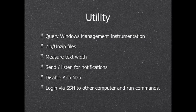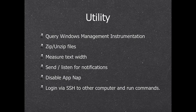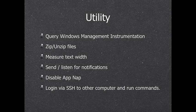We have more utility functions. You can query the Windows Management Instrumentation (WMI) database to see what events happened, what virus software is installed, processor info, CPU, disk, serial ports — all system information. We can zip and unzip files automatically. We can send and receive system-wide notifications — for example, if the user switches screen resolution we can get that notification, or a command-line app can send a notification when it's done and you can receive it. We can do SSH login to other computers and run commands.